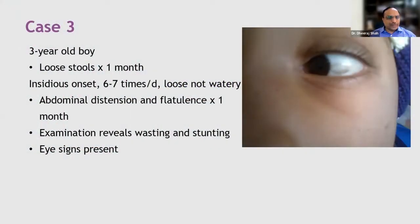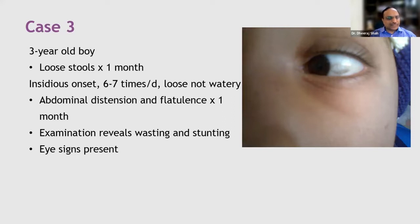This is a three-year-old boy who presented with a history of loose stools for a month. The stools are loose but not watery. The mother doesn't remember the exact onset but estimates about a month. He has stools six to seven times per day, along with abdominal distension and flatulence for the same duration.